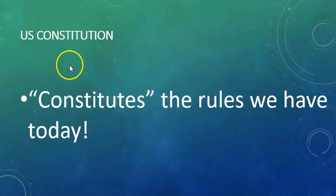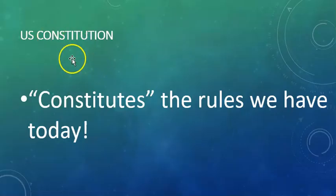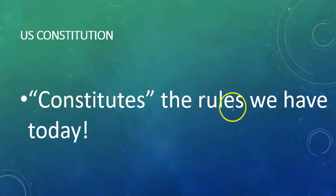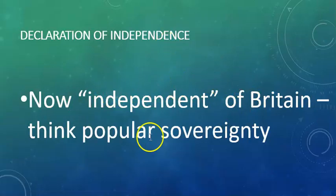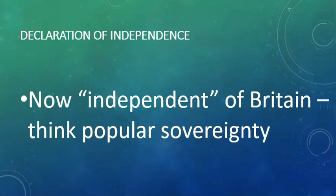And then the U.S. Constitution — you should know that's what we have today. Think about how the U.S. Constitution constitutes the rules we have today, and think about the seven articles. Last but not least, the Declaration of Independence — we are now independent of Britain. Think about the importance of popular sovereignty: sovereignty means making your own decisions.